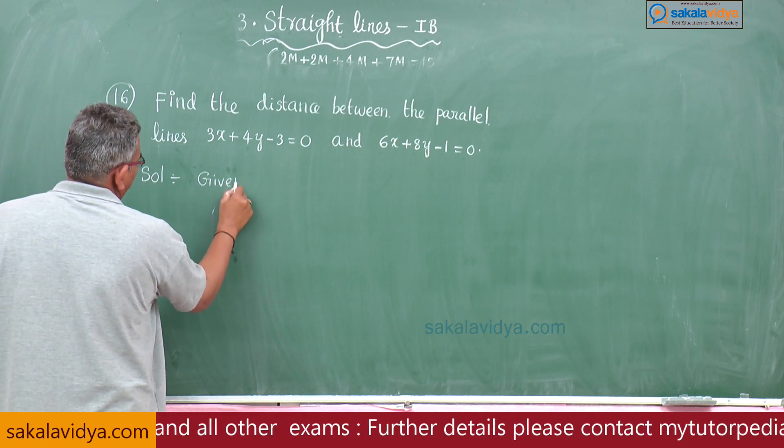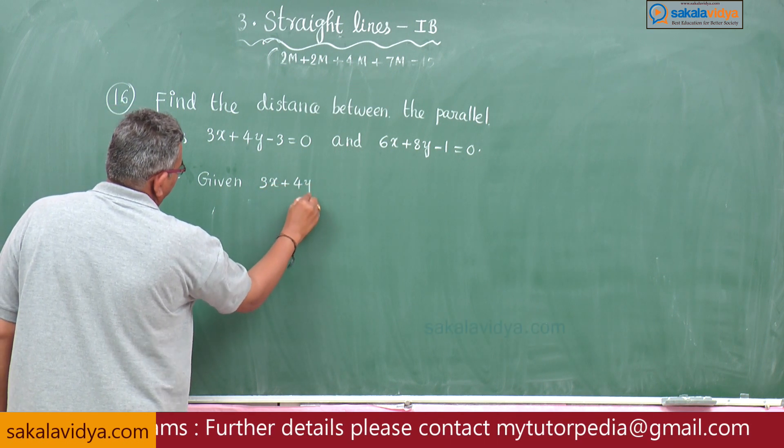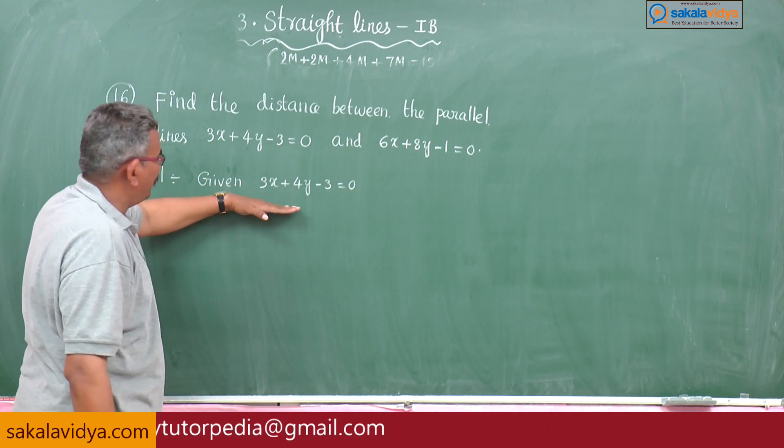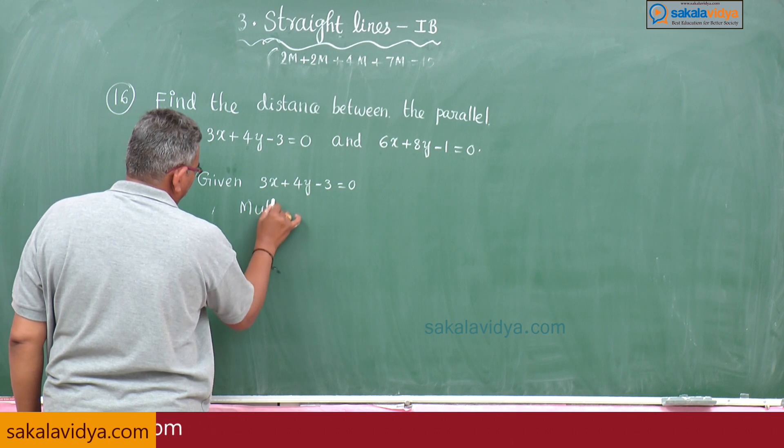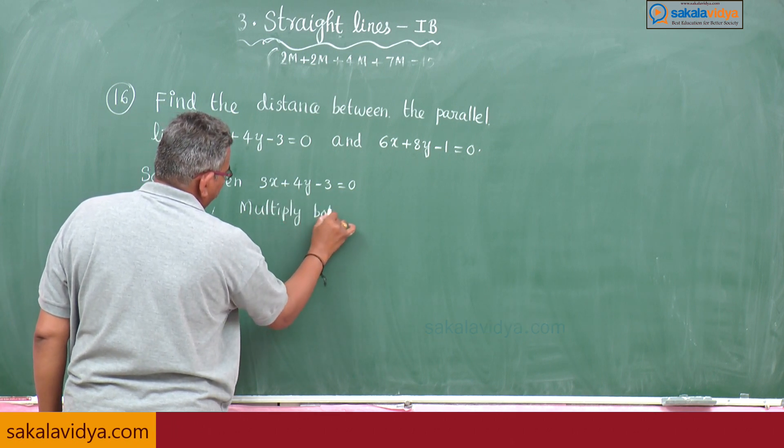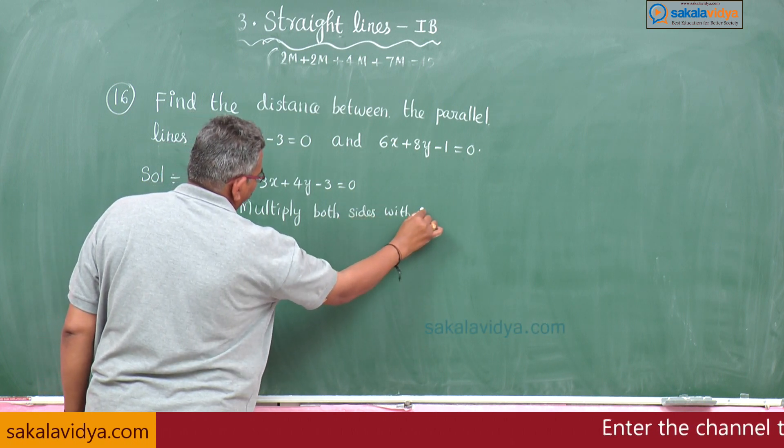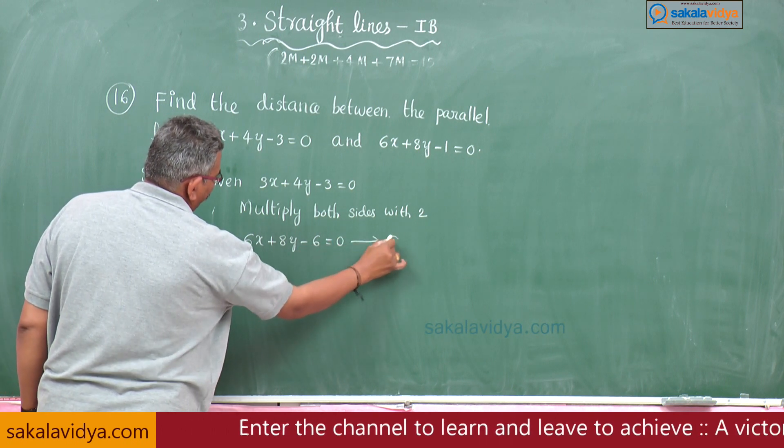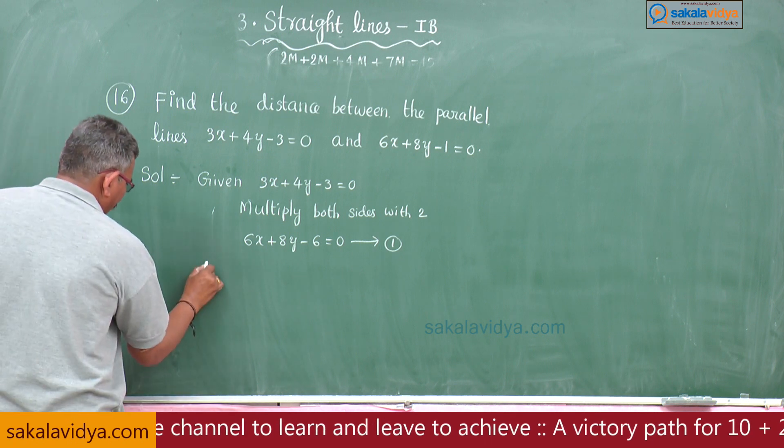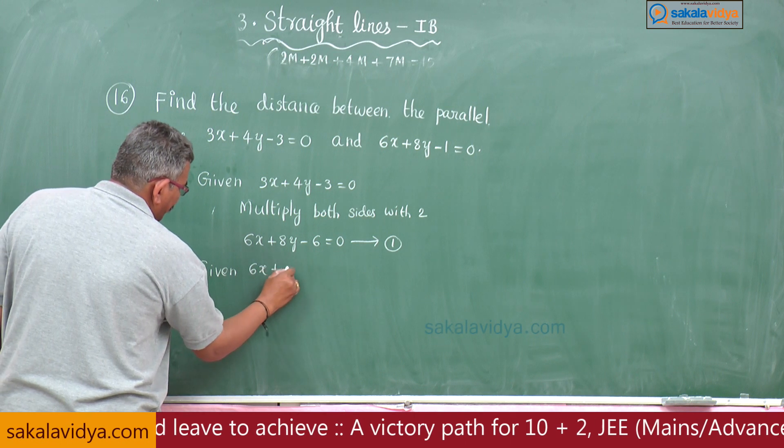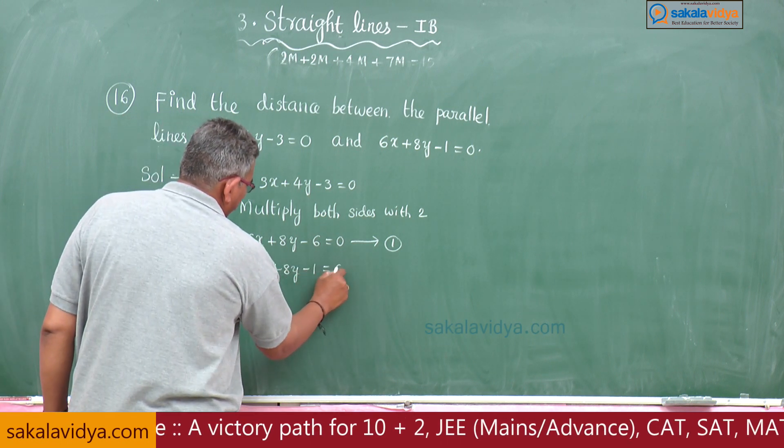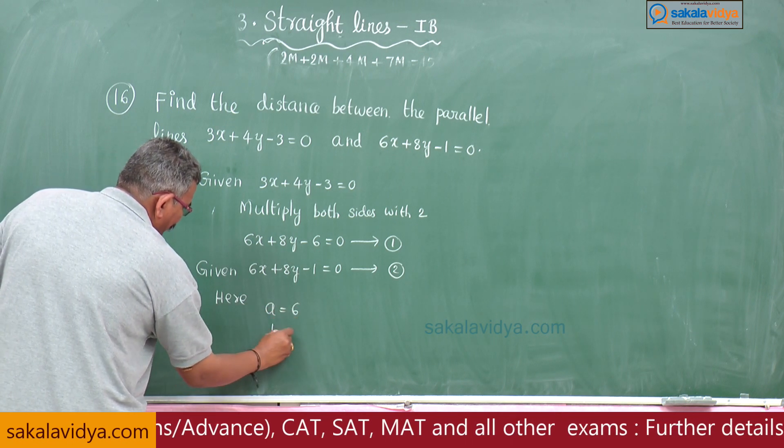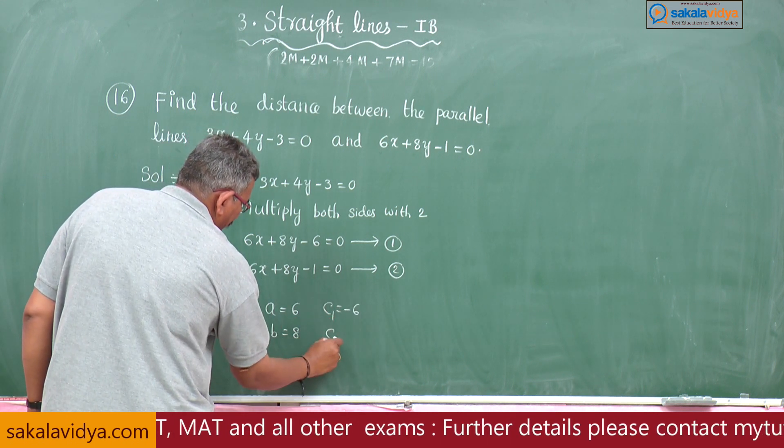Given 3x plus 4y minus 3 equals 0. To make the coefficients match the second equation, multiply by 2. This becomes 6x plus 8y minus 6 equals 0. The second equation is 6x plus 8y minus 1 equals 0. Here, a is 6, b is 8, c1 is minus 6, c2 is minus 1.